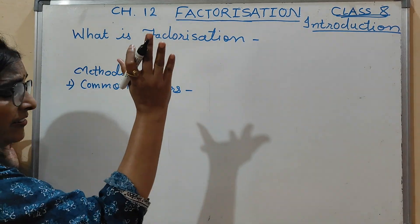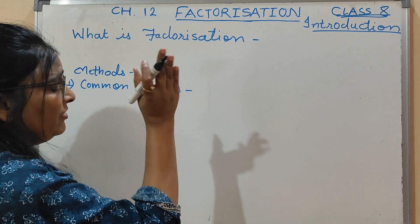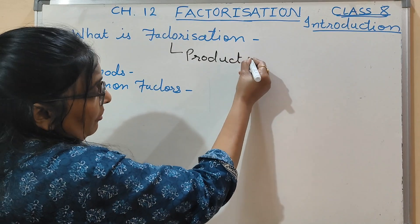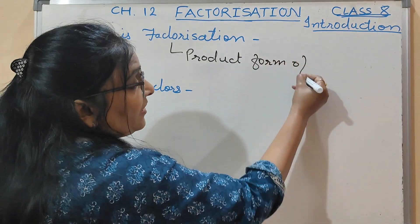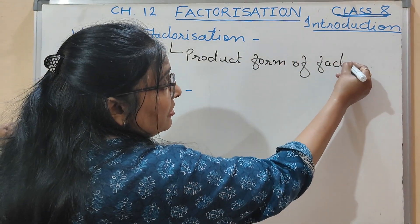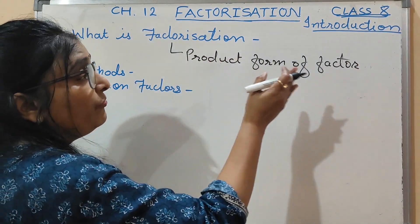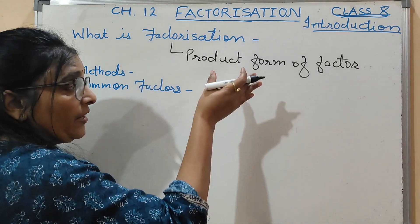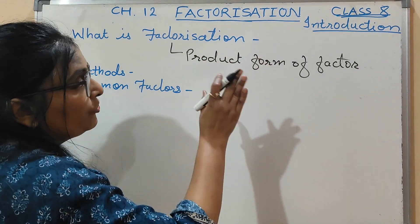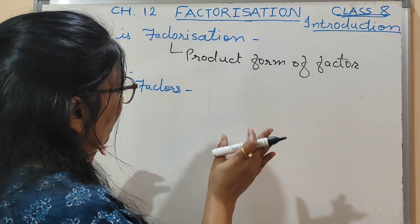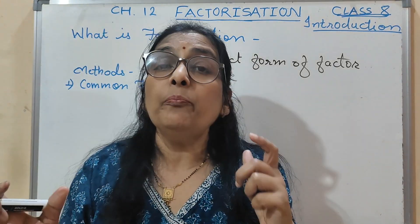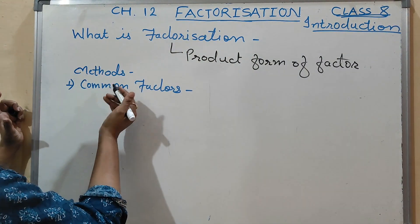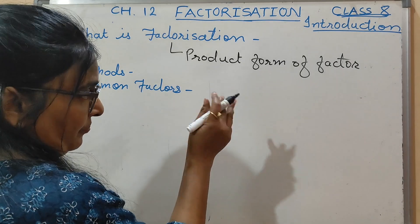What is factorization? Factorization is the product form of factors — writing an expression as a product of its factors is called factorization. There are different methods of factorization. One by one we will see these methods. The first method is common factors.